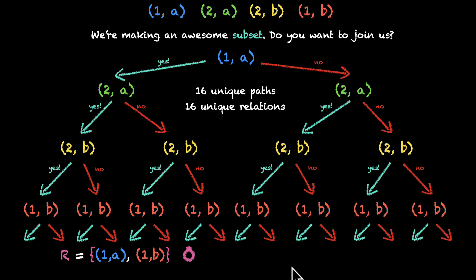What about, let's say, this last one? We saw this one a few minutes ago. So this relation is the empty set. And on the far left, we have yes, yes, yes, and yes. We have a relation where every single one of them says yes. This is also going to be a unique relation. So 16 unique paths and 16 unique relations.